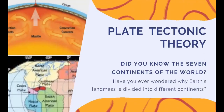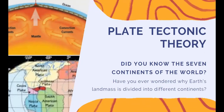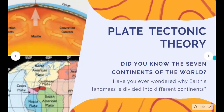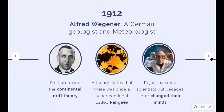The Plate Tectonic Theory. Do you know the seven continents of the world? Have you ever wondered why the Earth's land mass is divided into different continents? In 1912, Alfred Wegener, a German geologist and meteorologist, first proposed the Continental Drift Theory. It states that there was once a supercontinent called Pangea, which over time separated and drifted apart. It further claims that continents consist of lighter rocks resting on top of heavier crustal materials, and that the relative positions of the continents are not rigidly fixed — they are slowly moving at a rate of about one meter per century. This theory was initially rejected but later became the forerunner of the plate tectonics theory.